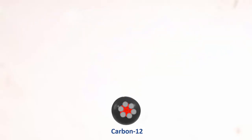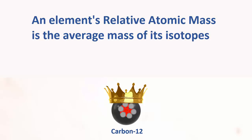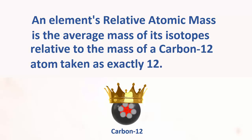All other atoms are then compared to a carbon-12 atom. So updating the definition: an element's relative atomic mass is the average mass of its isotopes, relative to the mass of a carbon-12 atom, taken as exactly 12U.